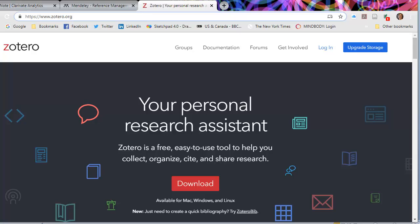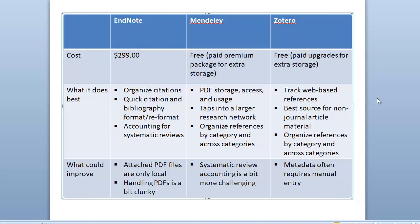Looking at the breakdown, I pulled together a quick comparison table. On cost, Mendeley and Zotero are both free, with paid premium packages available as annual subscriptions. For what they do best: EndNote is a great organizer with really quick citation bibliographies. It allows you to click on a citation and copy it out for a poster presentation, and it's really terrific for accounting in systematic reviews.